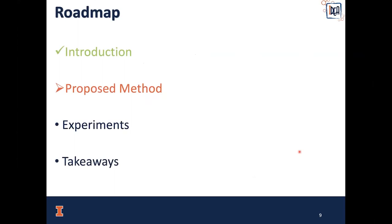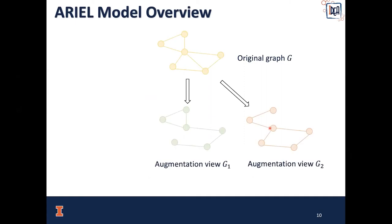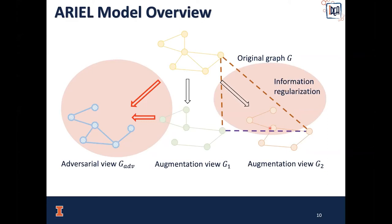To resolve these two challenges, we propose our framework ARIEL. First, given input graph G, we generate two augmentation views G_1 and G_2, as in the standard graph contrastive learning framework. Then we generate an adversarial view from the original graph to maximize the contrastive loss with respect to one of the augmentation views G_1. On top of that, we introduce an additional technique called information regularization, which is defined on the same nodes in three different views to regularize the feature space. The final training loss combines the original graph contrastive loss, the adversarial graph contrastive loss, and the information regularization term.